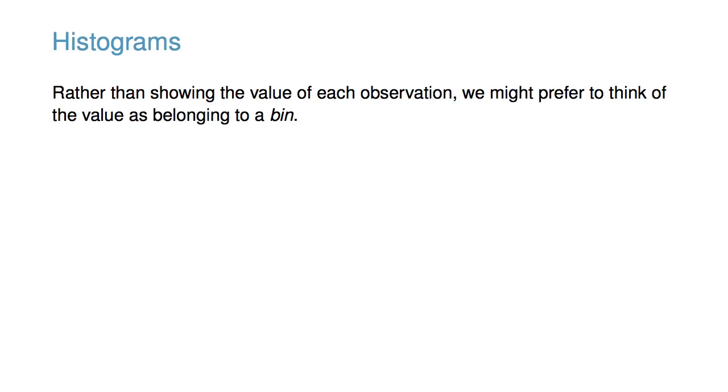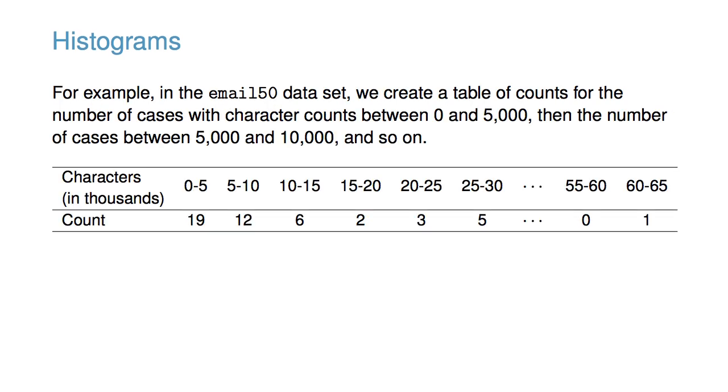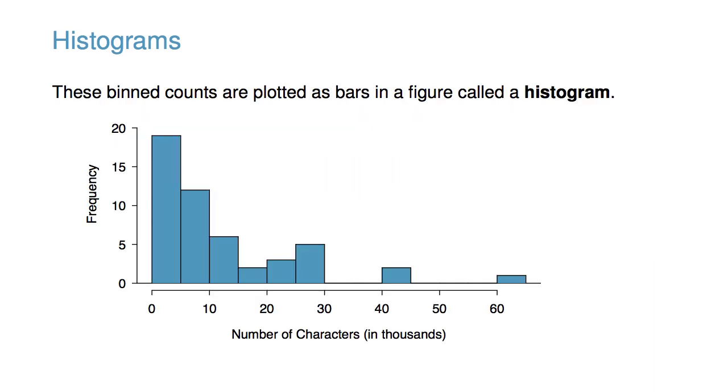Rather than showing the value of each observation, we might prefer to think of the values as belonging to a bin. For example, in the email50 dataset, we create a table of counts for the number of cases with character counts between 0 and 5,000, then the number of cases between 5,000 and 10,000, and so on. These binned counts are plotted as bars in a figure called a histogram.